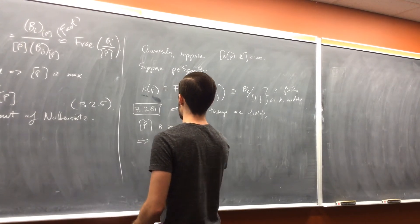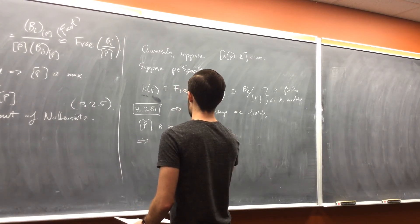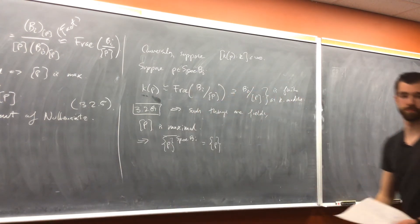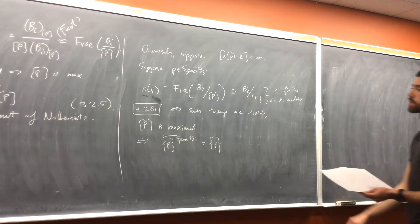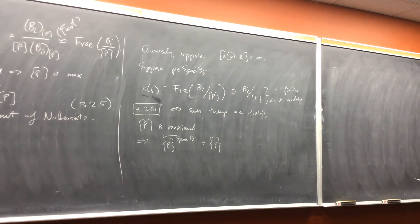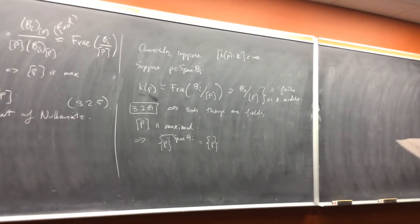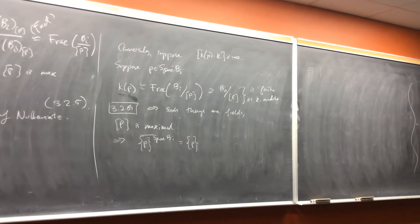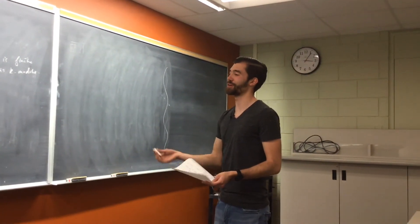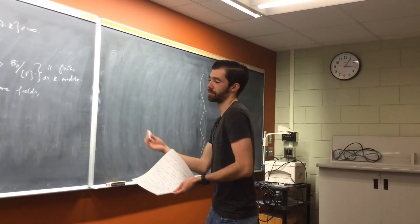So I can take the closure of p living inside Spec B_i, and I get p back — it's closed inside B_i. And we've done this for every Spec B_i that p lives in. So there's a more general topological argument: the closure of p in X, intersected with each Spec B_i, is just p. So p is actually closed in all of X.